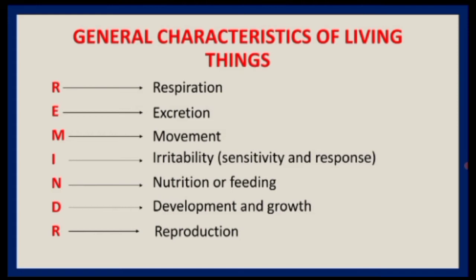At night, sunlight is not present so plants cannot convert raw materials through photosynthesis. This can lead to suffocation from reduced oxygen and may cause death. Now let's look at excretion — excretion simply means the removal of metabolic waste products or substances from the body of an organism.